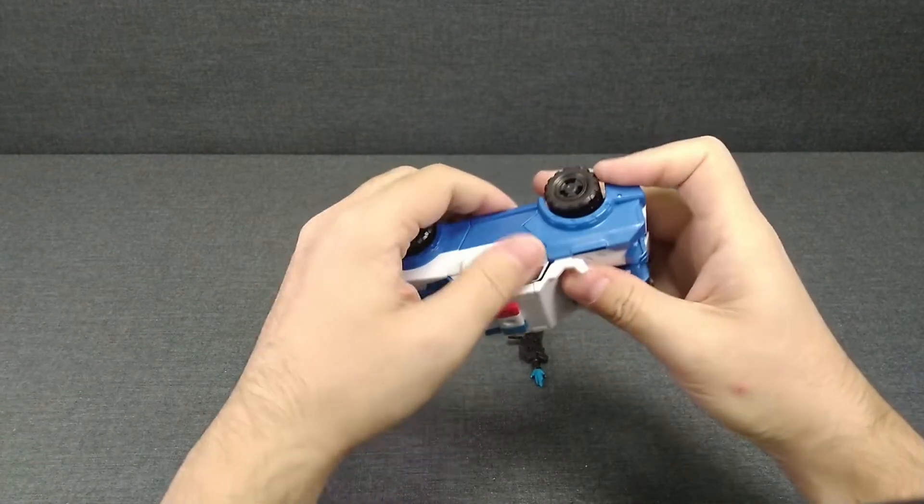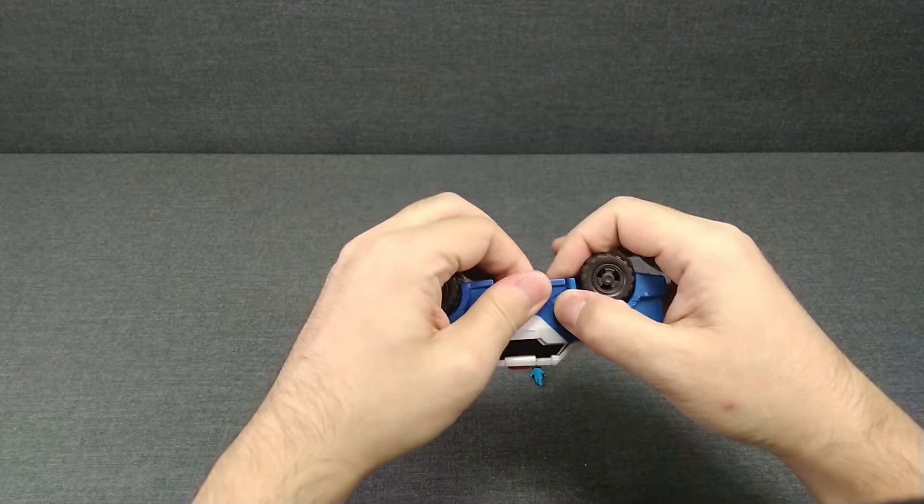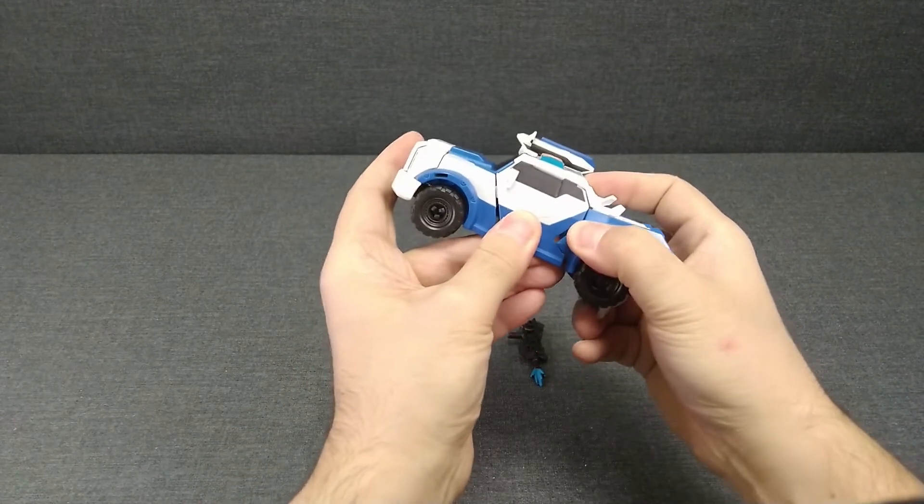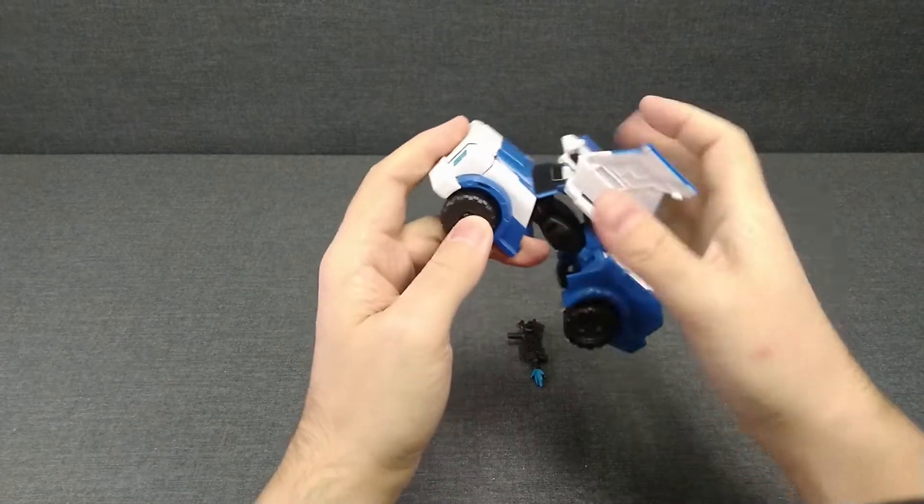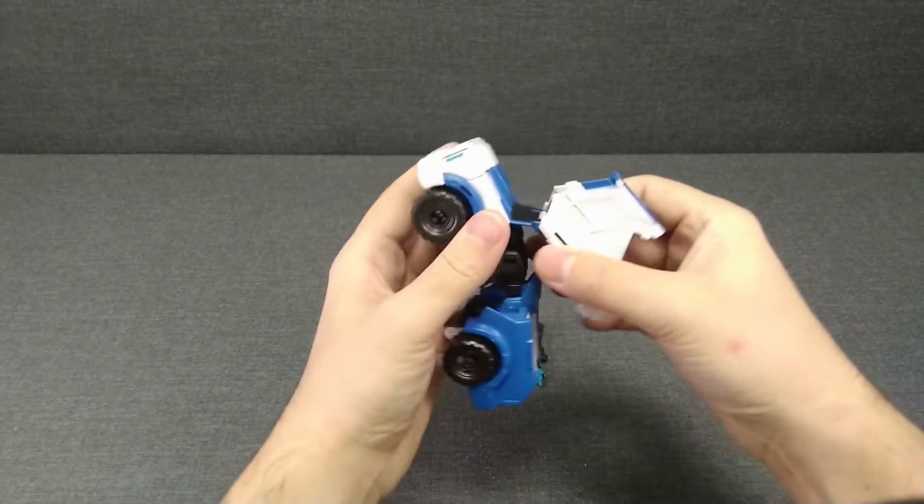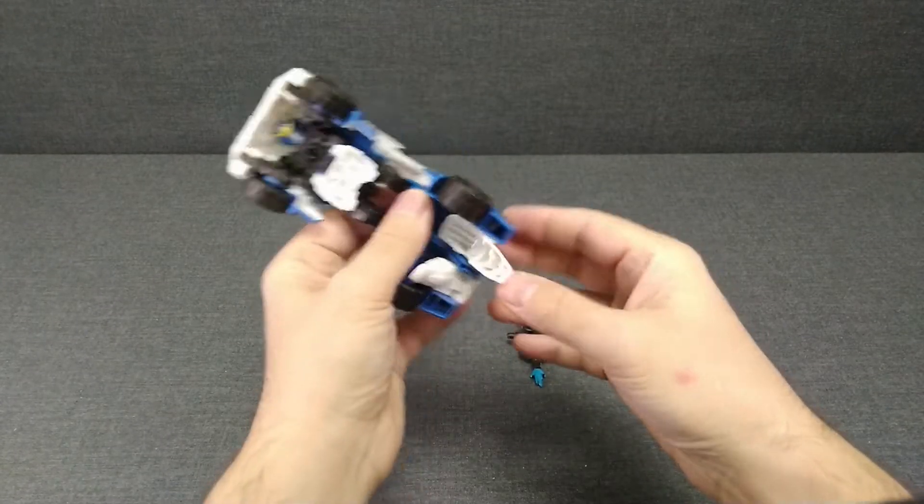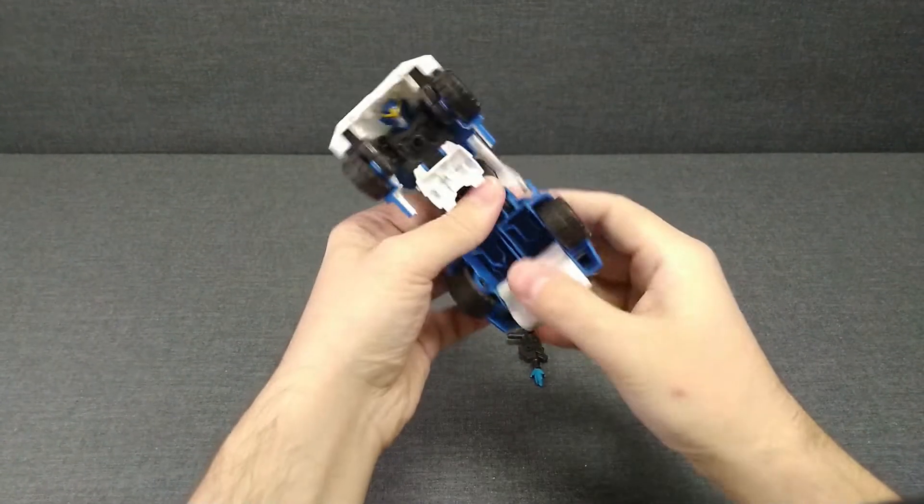First, you need to carefully extract the so-called wings, then these are the legs.